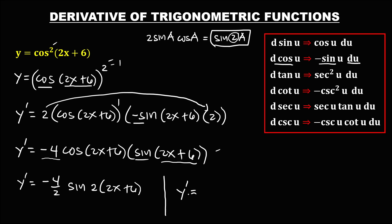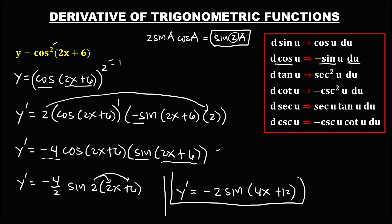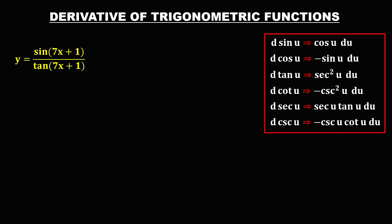To simplify: y prime equals negative 4 divided by 2, which is negative 2. Then sine of u, where u is 4x plus 12. So y prime equals negative 2 sine(4x + 12). This is now the derivative.